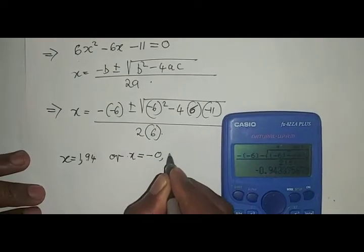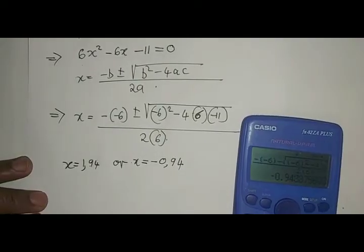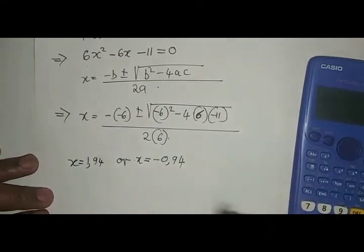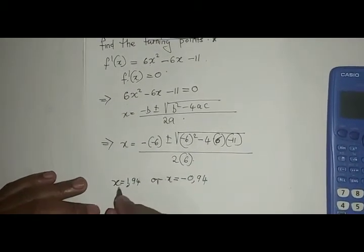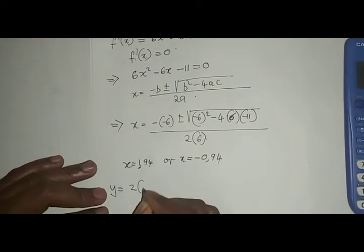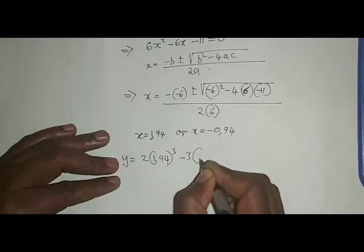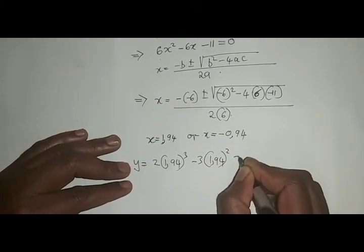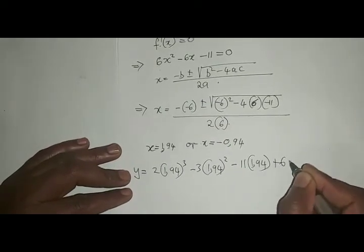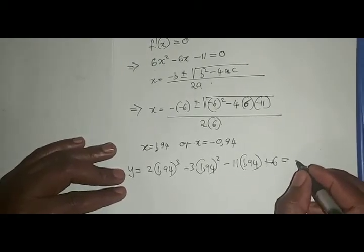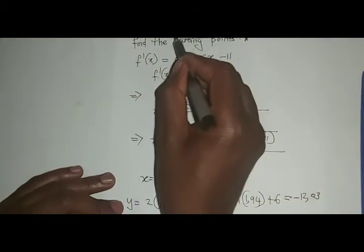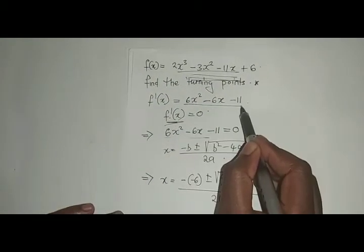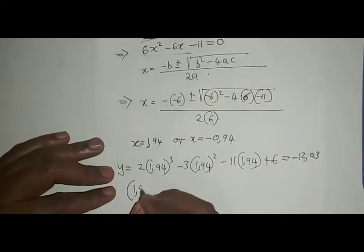Remember, we are looking for the coordinates of the turning points, which means to find the y-value you substitute into your original function. Therefore, where there is x, to find the y-value you would say y equals 2(1.94)³ - 3(1.94)² - 11(1.94) + 6, which in this case would give us -12.03. You can confirm that with the calculator. So you substitute into the original, not into the derivative, not into f', but we must substitute into the original. So therefore this point becomes 1.94 and the y-coordinate is -12.03.